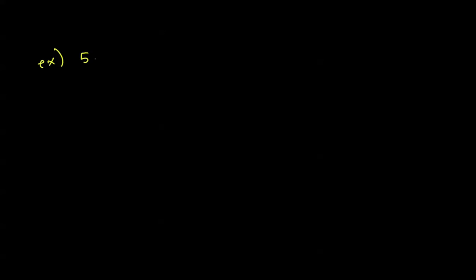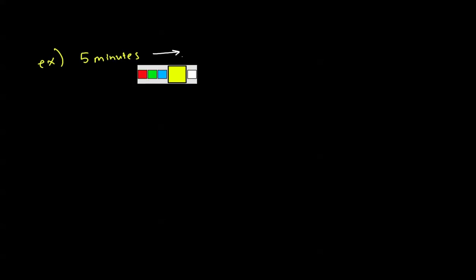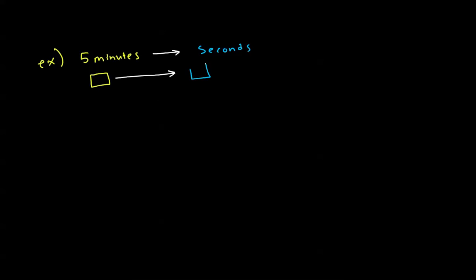Let's say we are given 5 minutes, and they ask us to change these 5 minutes into seconds. Now what we need to do here is kind of like the first concept — we have a box and we are going to change it into another box of the exact same size. It just looks different. It's like if I had one dollar and my best friend had 100 pennies — they are the same thing, they just look different. This is a pretty easy example.